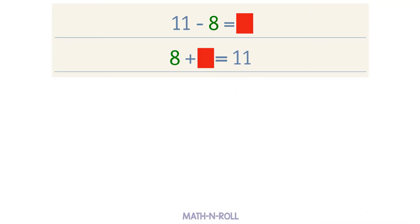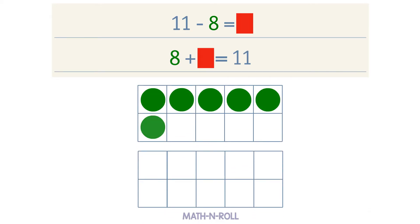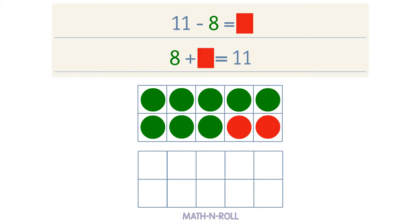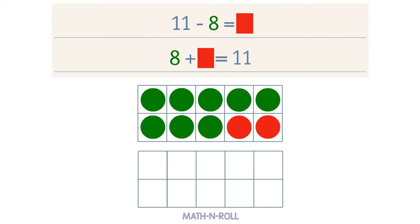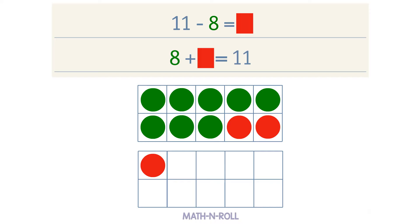Use the make a 10 strategy to solve. Take a look at the model. We have 8 circles. We add 2 red circles to make a 10. How many more red circles do we need to get 11? We need 1 more red circle. 2 plus 1 equals 3, so we counted up 3 to get to 11. This means that 8 plus 3 equals 11, so 3 is our unknown number. 11 minus 8 equals 3.